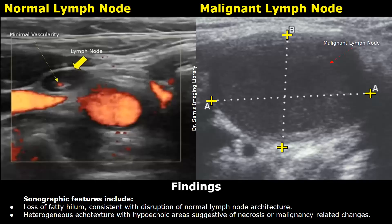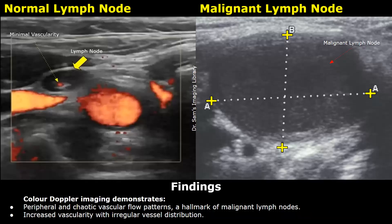Sonographic features include loss of fatty hilum, consistent with disruption of normal lymph node architecture, and heterogeneous echo texture with hypoechoic areas suggestive of necrosis or malignancy-related changes. Color Doppler imaging demonstrates peripheral and chaotic vascular patterns — a hallmark of malignant lymph nodes — with increased vascularity and irregular vessel distribution.